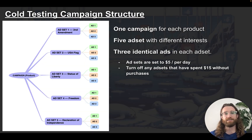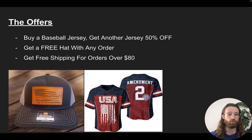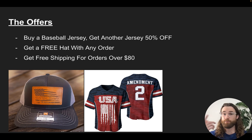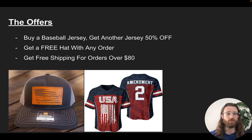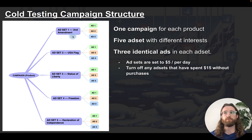The cold testing campaign structure: you have one campaign for each product and then five ad sets with different interests. Your interests will change based on what you're selling. For this client, they were in the patriotic second amendment niche — selling leather patch caps, hats, jerseys with flags, baseball jerseys, football jerseys, and hockey jerseys.